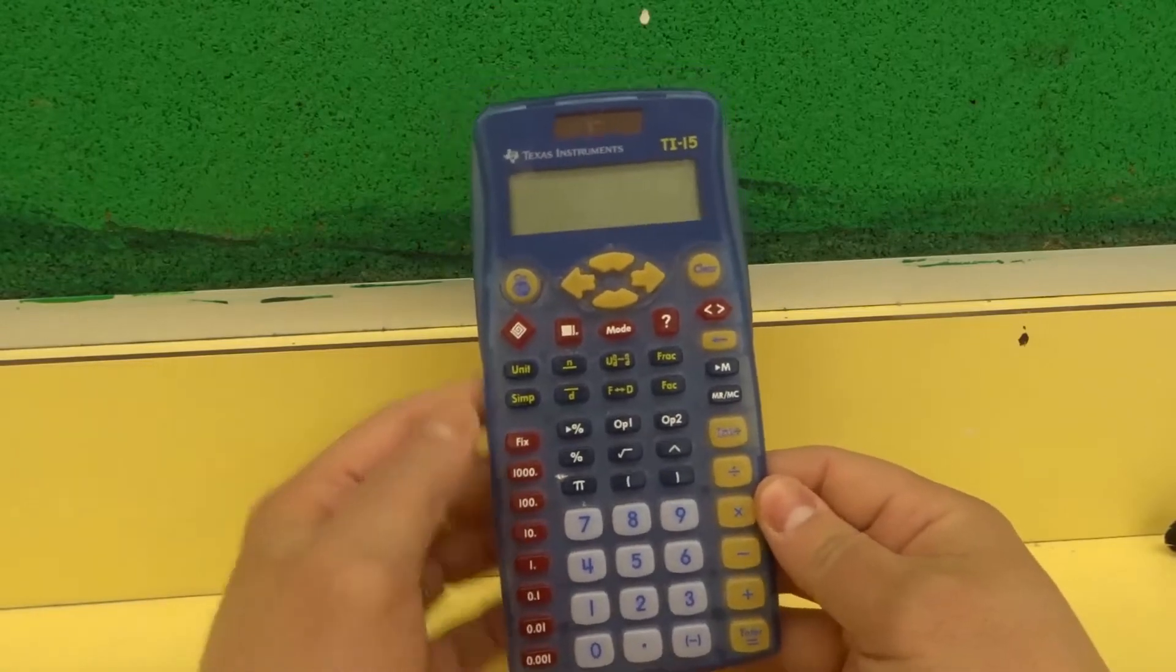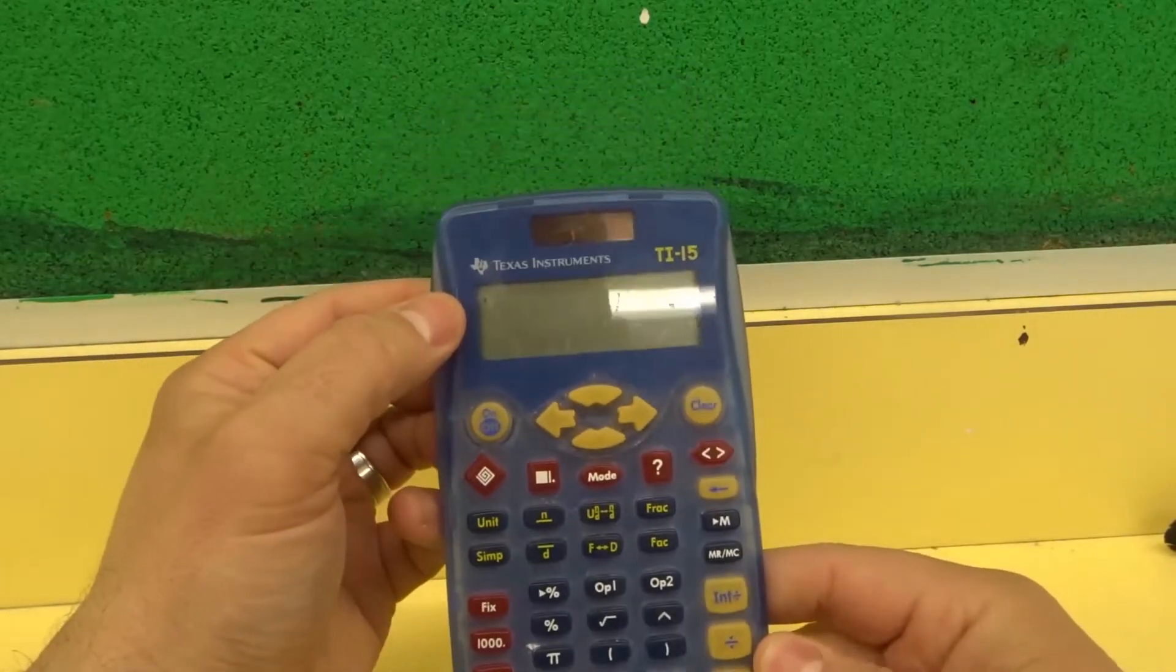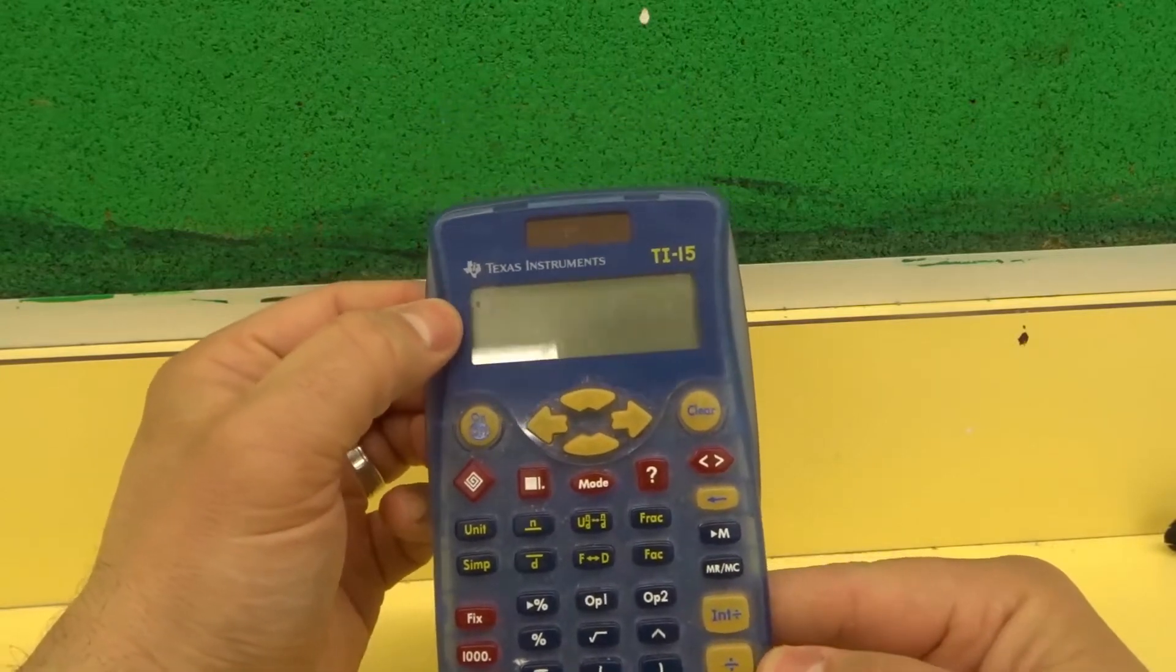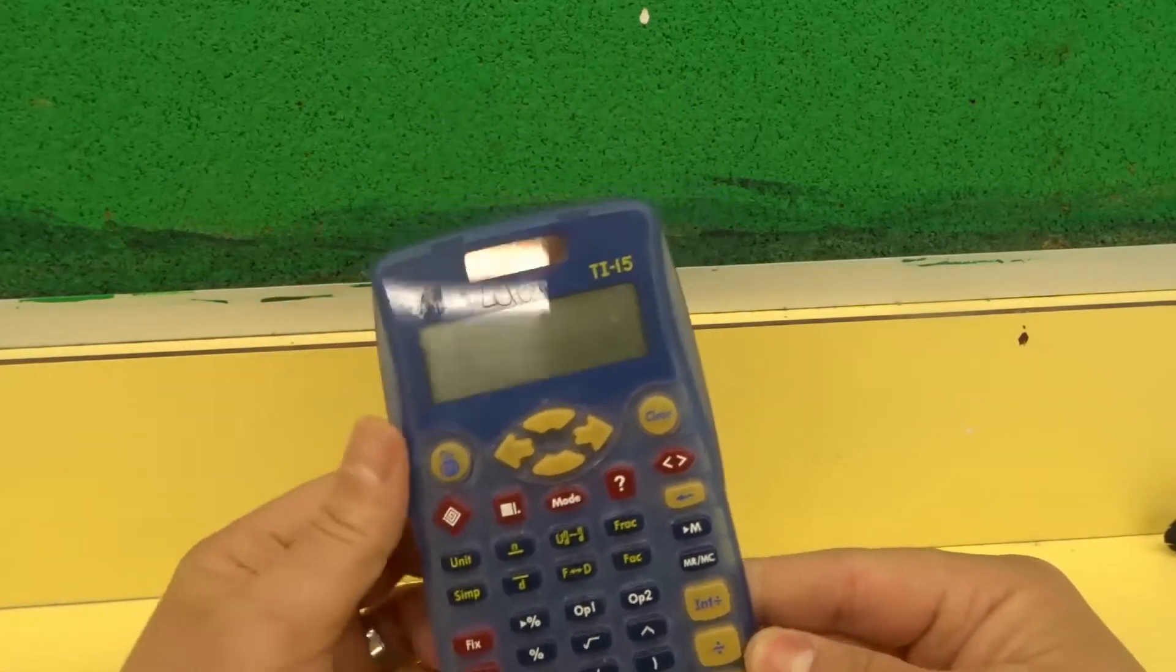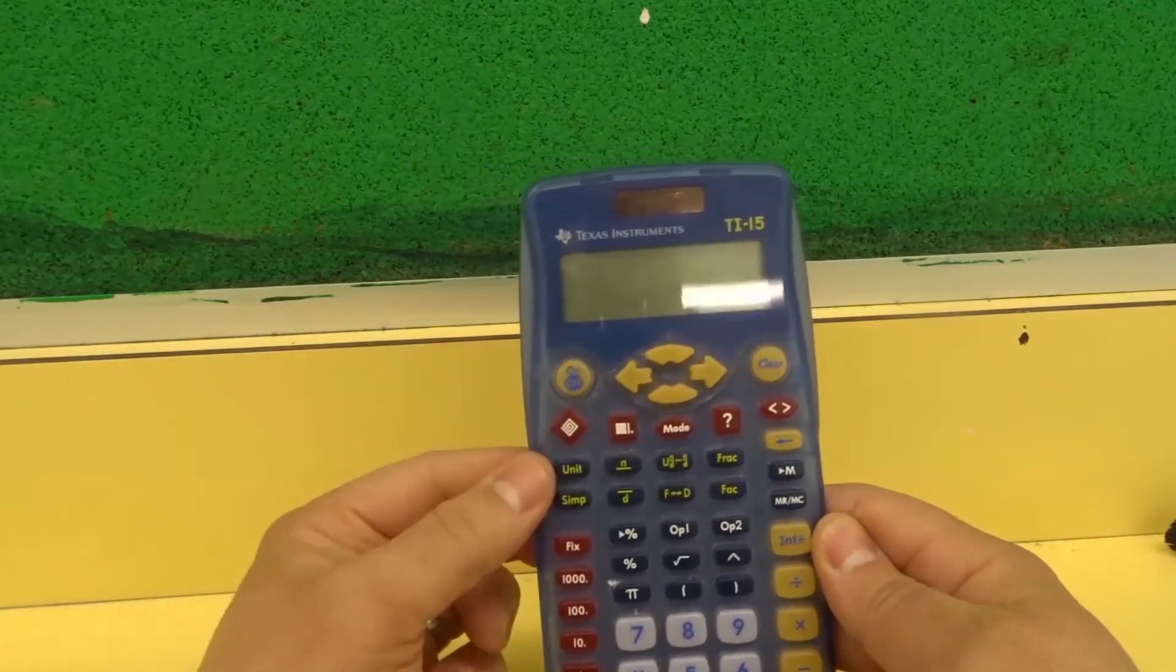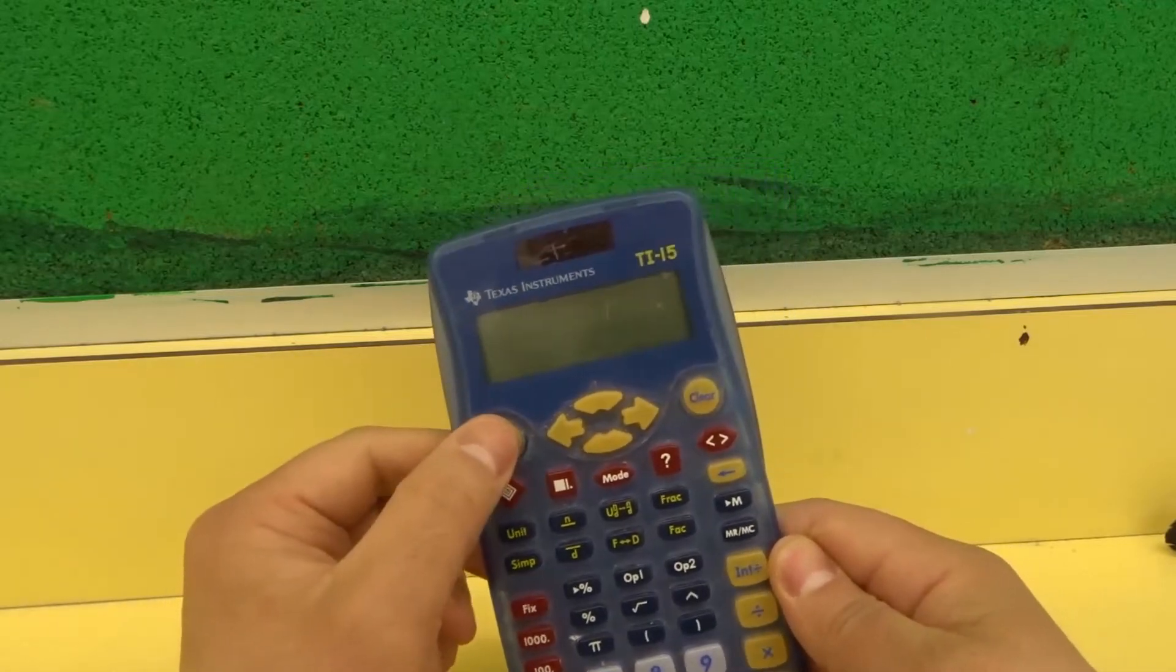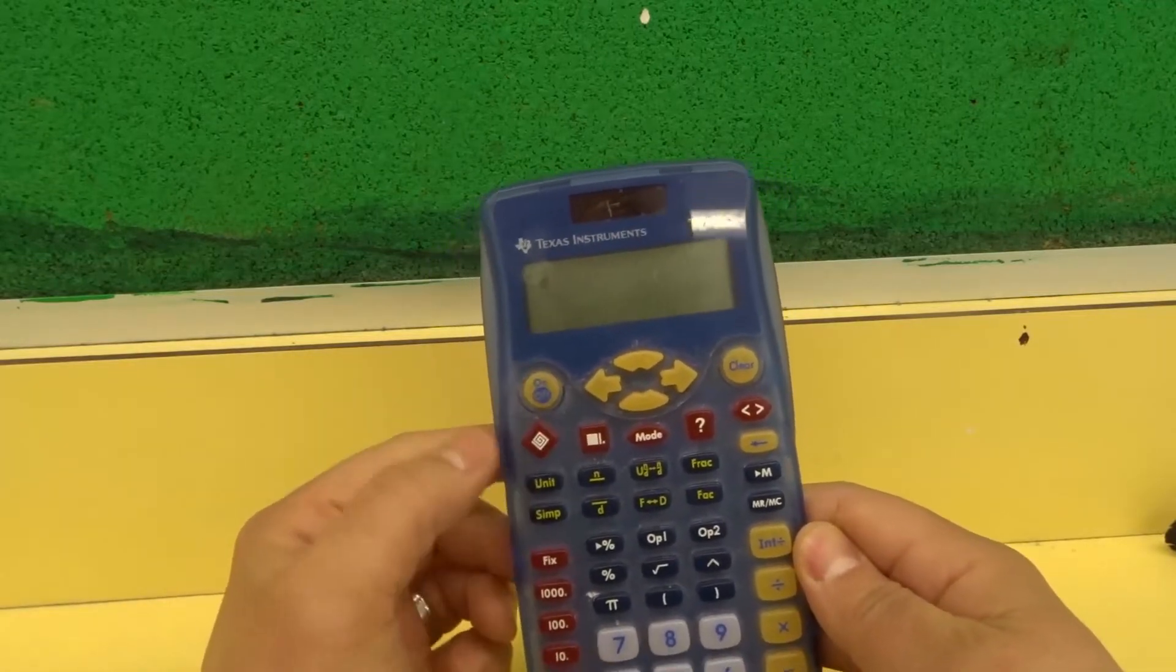So first and foremost, you want to turn the calculator on. I can turn it on just like that. It's hard to see because the screen is kind of scratched up, but it's sort of flashing over there. So the calculator is on. And in this calculator, you have the option of turning it off as well. But in most calculators, if you just leave them alone, they're going to turn off after a certain amount of time as well.